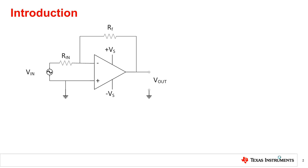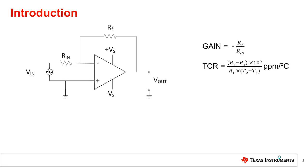The gain of the ideal circuit is given as the feedback resistor divided by the input resistor. However, in actual implementation, this may not be true since the resistors used have a temperature dependency. This is known as the temperature coefficient of resistance, or TCR, and is measured in parts per million per degree Celsius. The manufacturer provides the maximum limit for the TCR in the data sheet for the component with respect to a room temperature of 25 degrees Celsius.